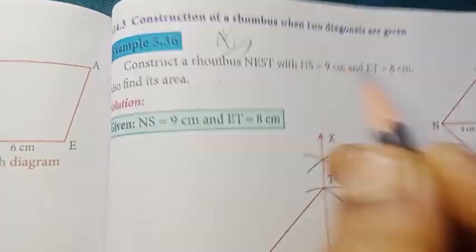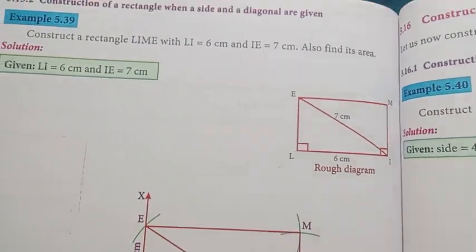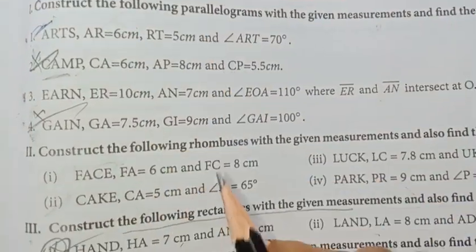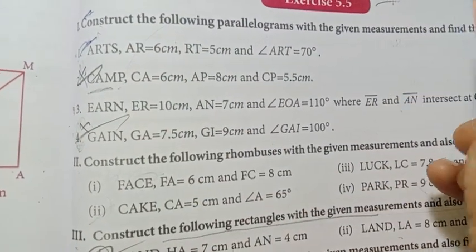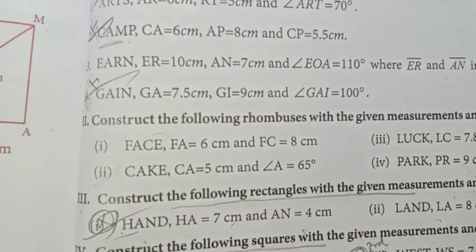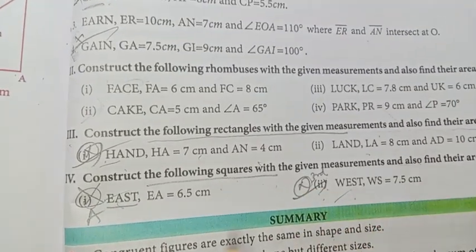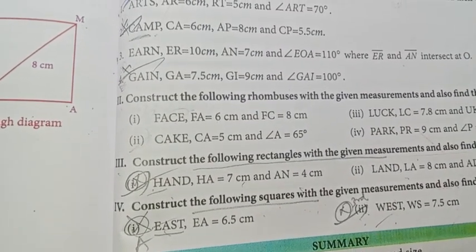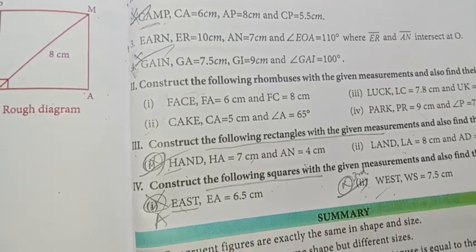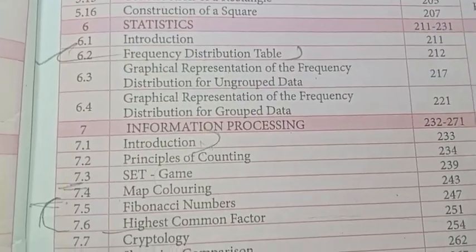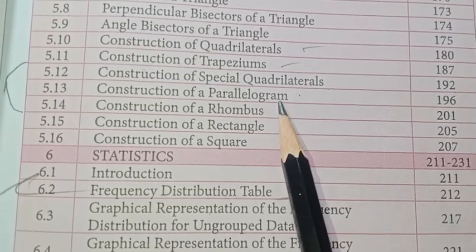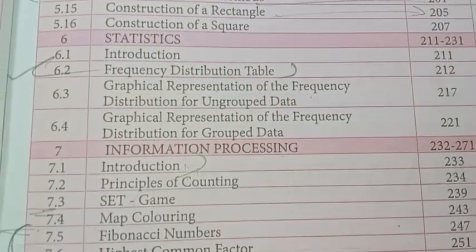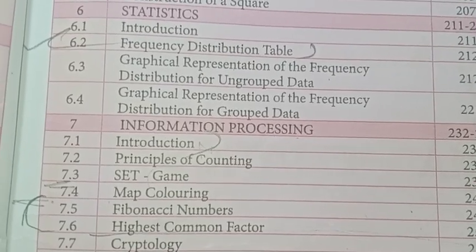Example 5.33 important, example 5.34 important, example 5.41 important. You can see a rectangle in this page. Section 5.5 — compulsory question for geometry. Questions 1 and 2 important, first one important. Roman numbers 1, 2, and 4 important. Parallelogram, rhombus, and quadrilateral — you can see a graph. Quadrilateral, parallelogram, rhombus, rectangle. Page 192, 201, and 243.